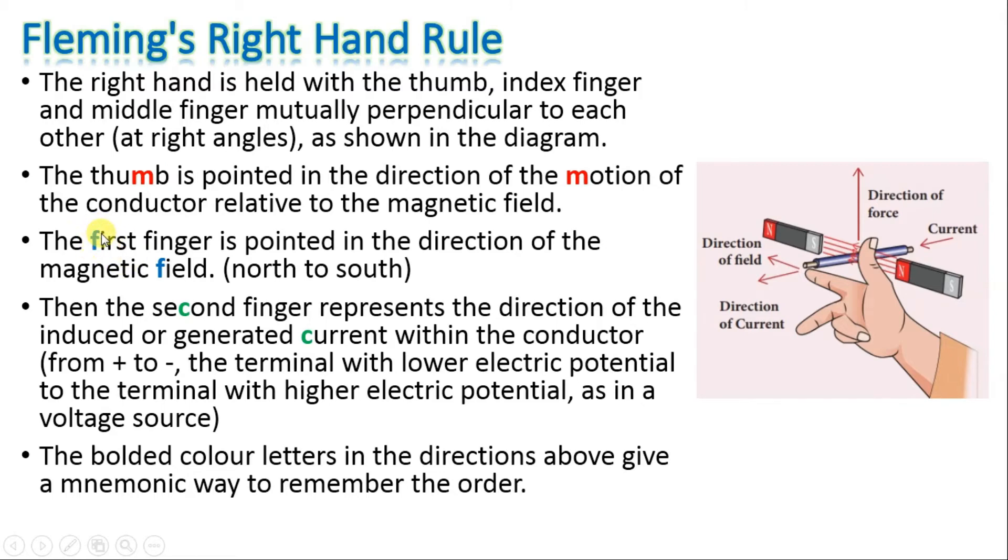First finger F represents field, so first finger in the direction of the field. And second has C which represents current, C for current. So this is a method to remember.